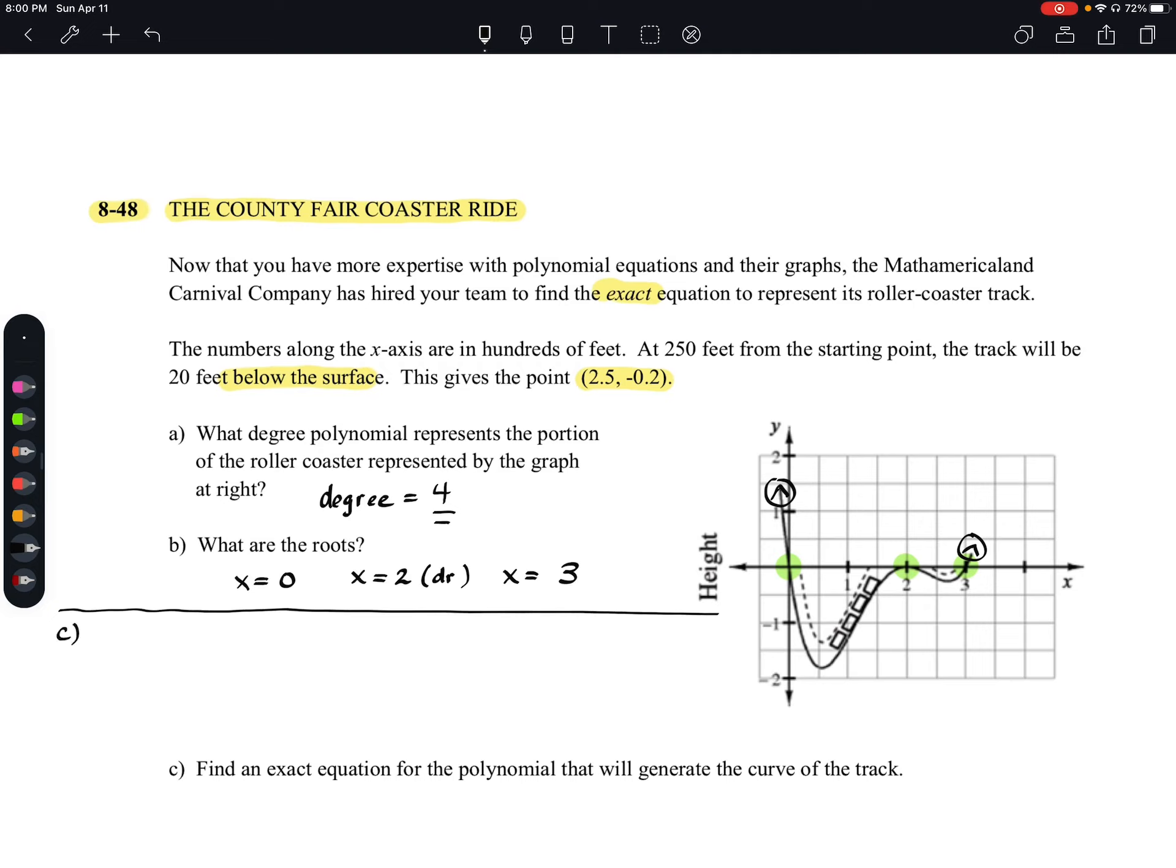We know that if we have our roots, we can turn them into factors. So we'll say y is going to equal, if x equals 0 is a single root, we know that x is a factor. If x equals 2, we're going to have an (x - 2), and we're going to square it. And then we're going to have an (x - 3) as a factor because we have x equals 3.